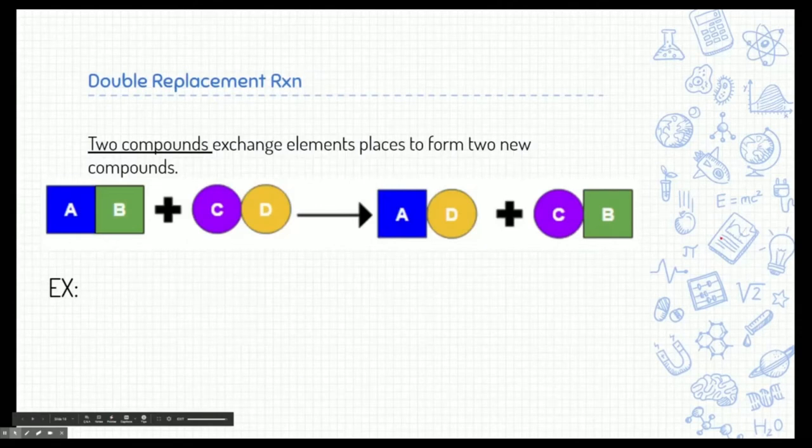Next is double replacement reaction. This is where we have two compounds. This is very similar to a single replacement reaction. But this time, we have two dance partnerships. Here we have partners AB and here we have partners CD. And what they're going to do is they're just going to change up friends. They're going to change up partners. And A is going to go dance with D and C is going to go dance with B. Always sticking to opposite charge.